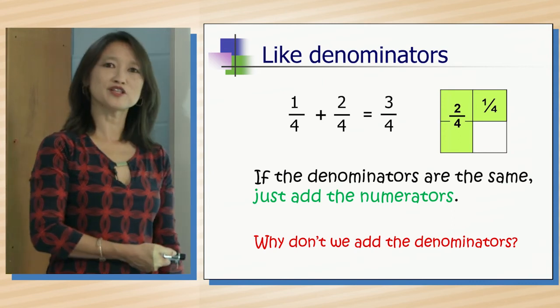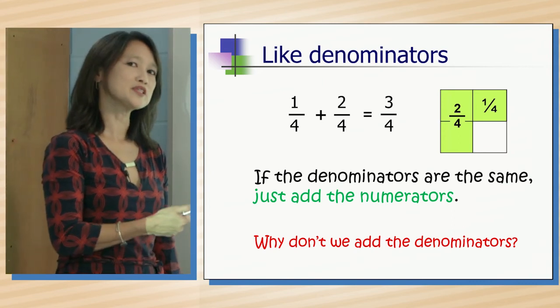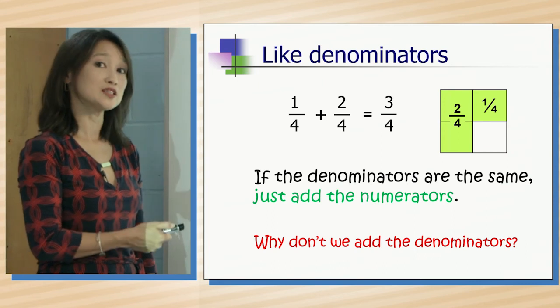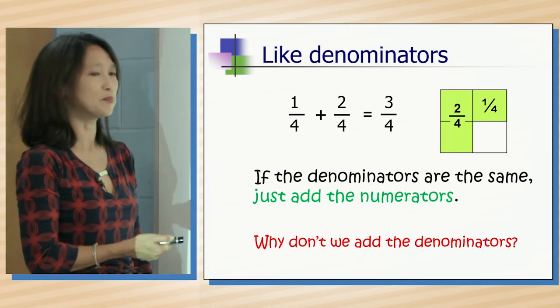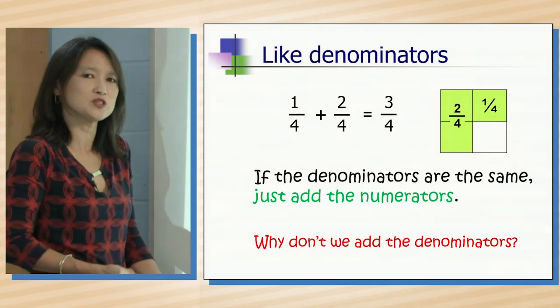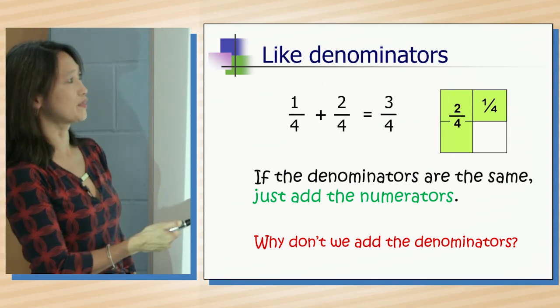How come we don't add the denominators? Because remember, the denominators tell us how big the pieces are. If you were to add the denominators and get a bigger number, it would mean that the size of the pieces were getting smaller. And they're not. They're still fourths.